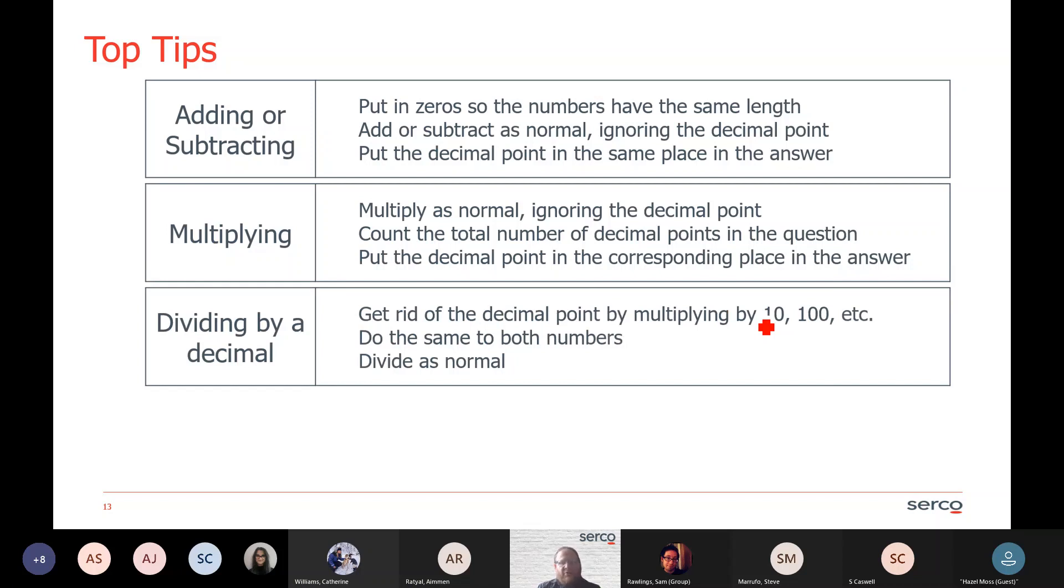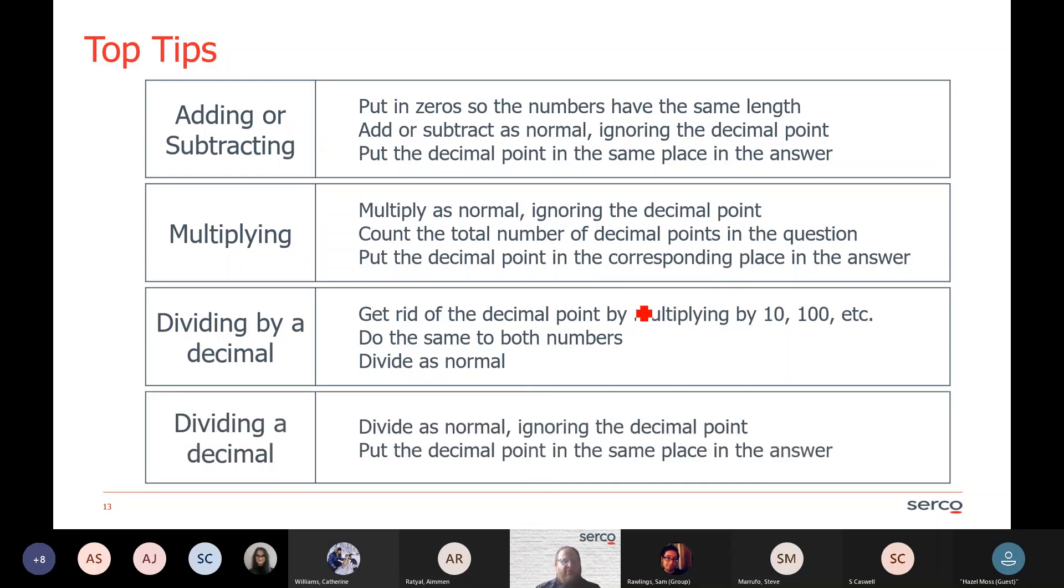Two options when you're dividing. If you're dividing by a decimal, what you do is get rid of the decimal point by multiplying it by whatever you need to, maybe 10, maybe 100. And as long as you do the same to both numbers, you're keeping the ratio so you can just divide as normal. And finally, if you're dividing a decimal, so your number is a decimal divided by a whole number, you just divide as normal, ignoring the decimal point, and then just put the decimal point in the same place in the answer.